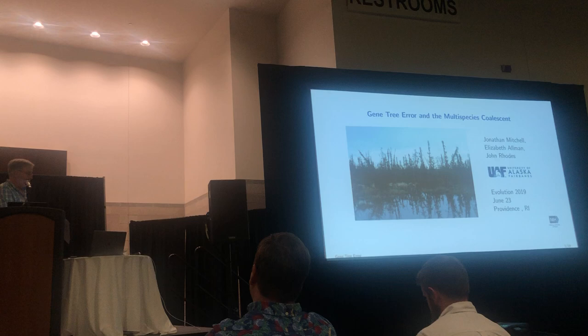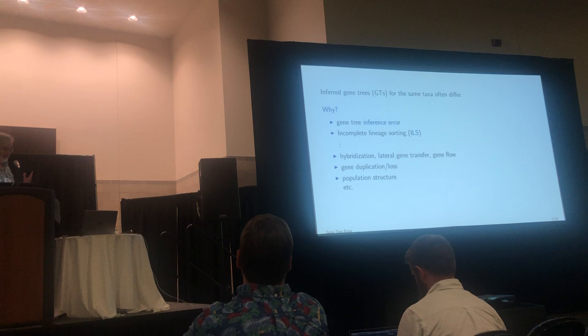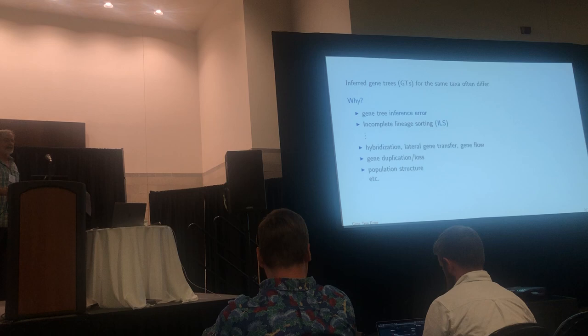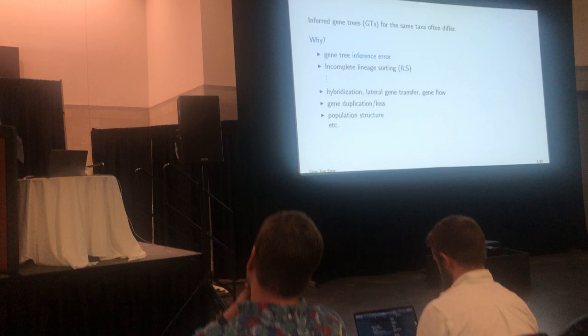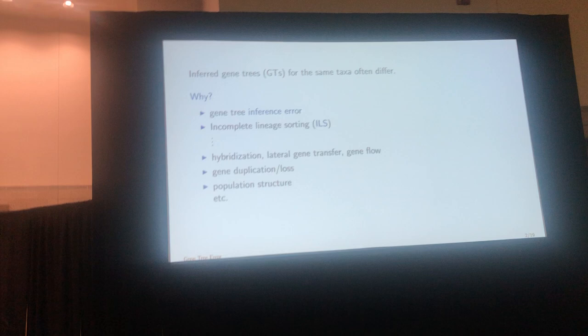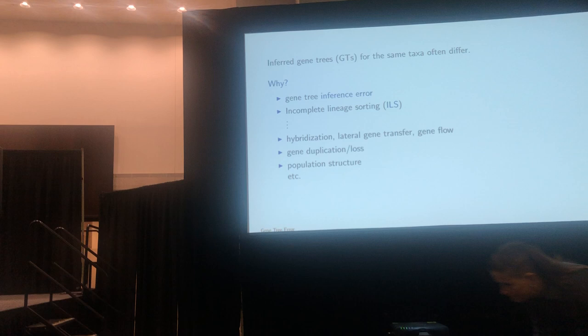If you have a collection of inferred gene trees, there's often a lot of discordance between them. I think it's important to list all the possibilities that might be going on. Gene tree inference error is certainly likely to be present in any data set. Incomplete lineage sorting is often commonly suspected, though there are some who argue that it shouldn't be so important.